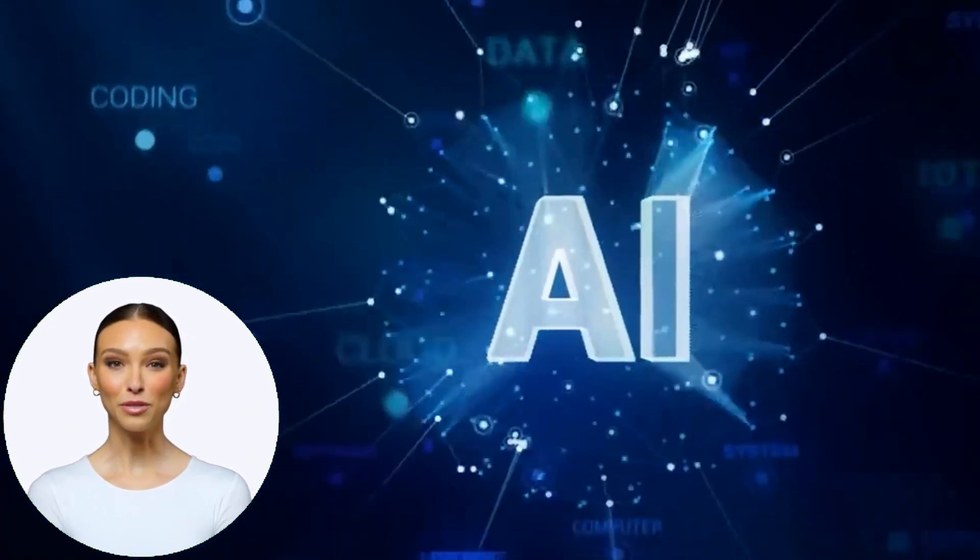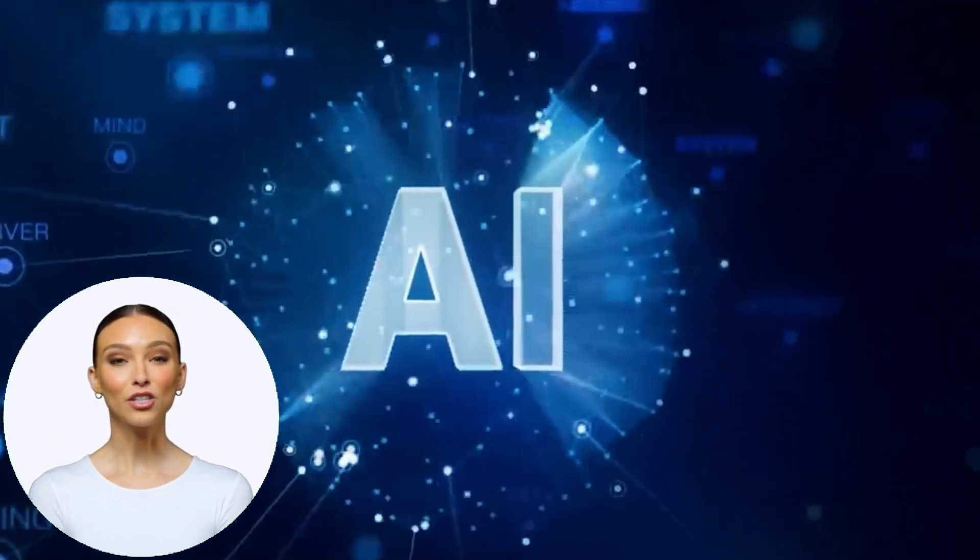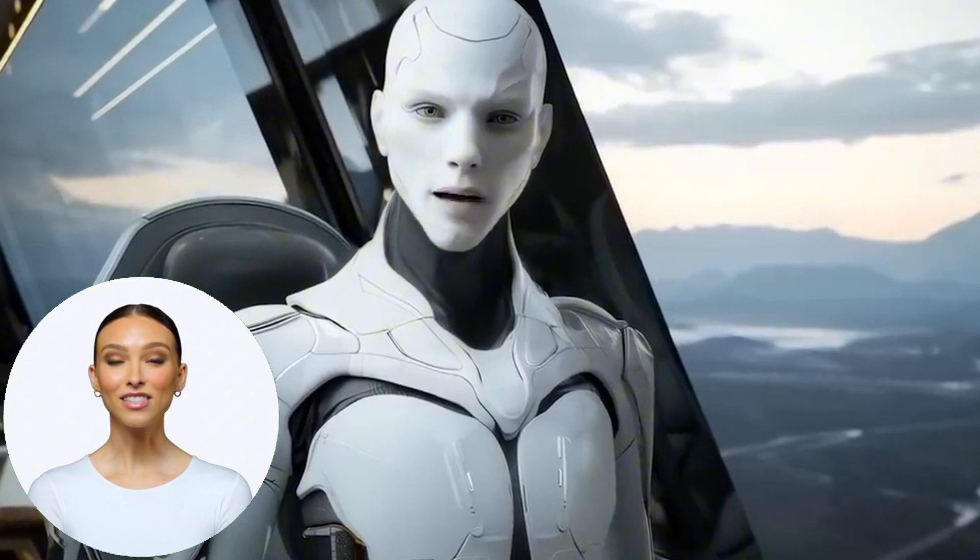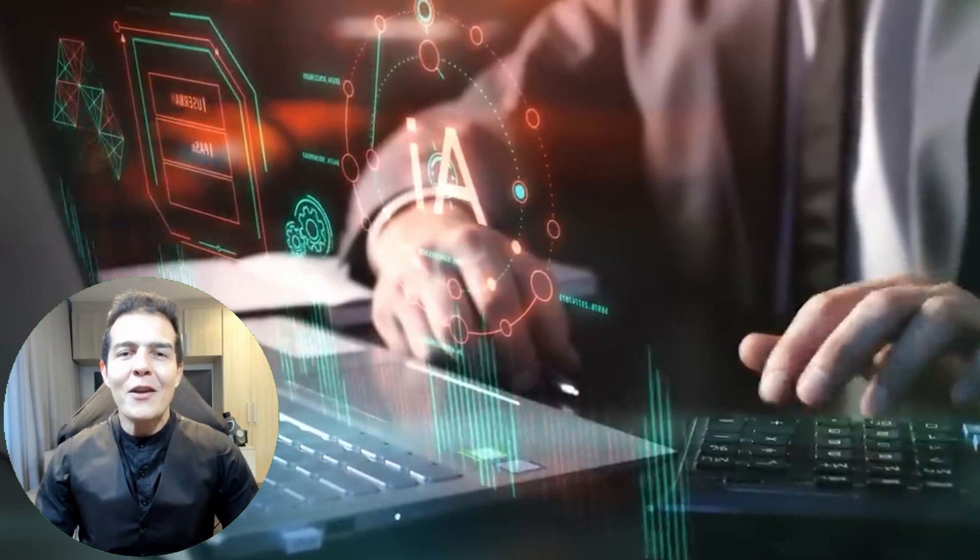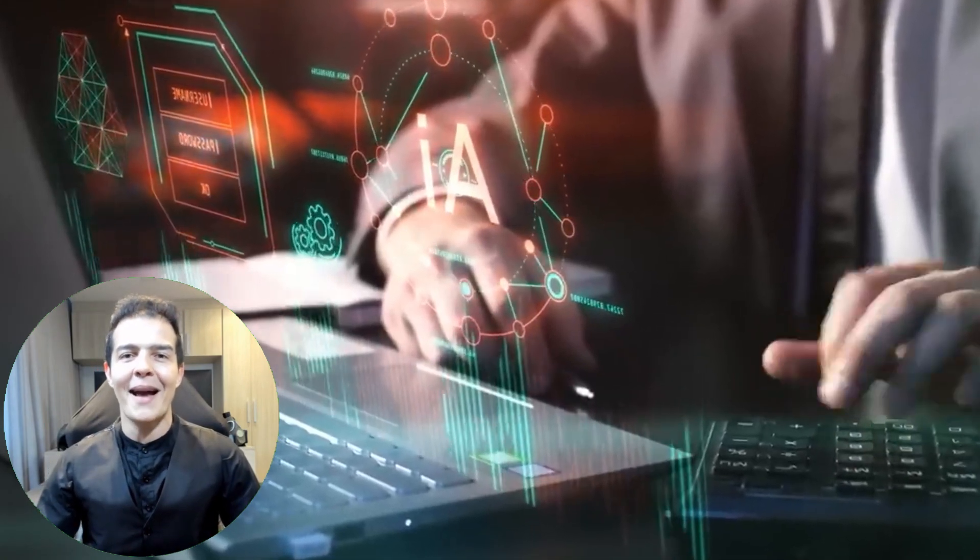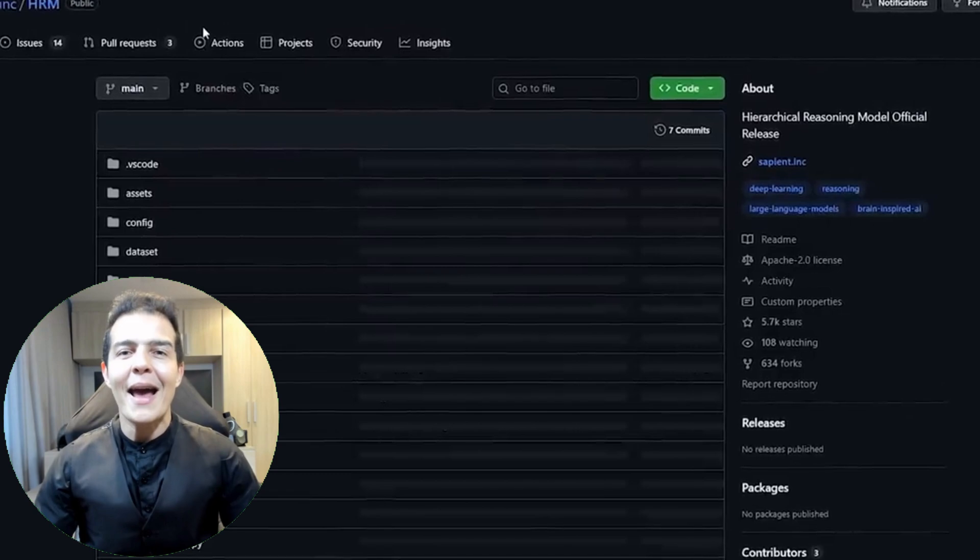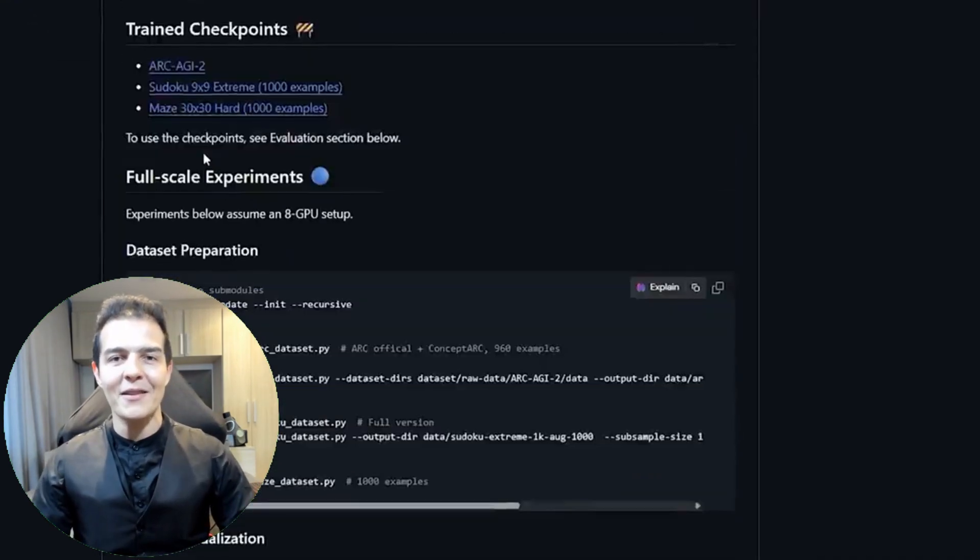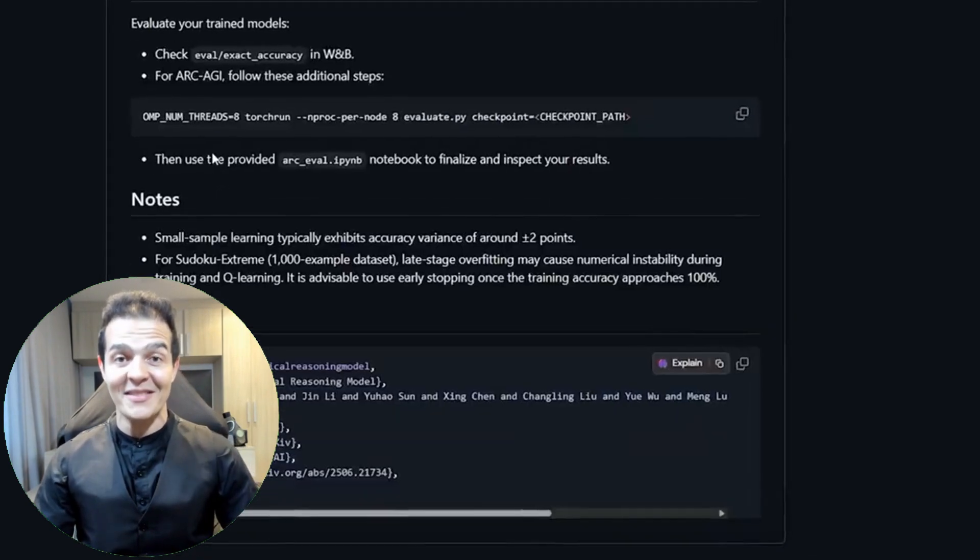This confidence usually comes from people trying to sell something, but in this case, the results are proving it. And you don't just have to take their word for it. The entire project is open source. You can check it out on GitHub right now, train your own version, modify it, see how it works. This transparency is rare for something so promising. And of course, it's still early days. The HRM has a narrow focus. Reasoning, not chatting. Don't expect it to write poetry or summarize emails. But as a proof of concept, it's one of the strongest we've seen.